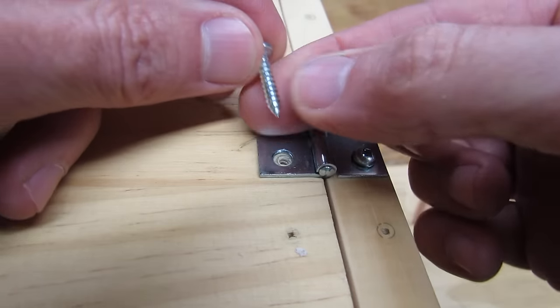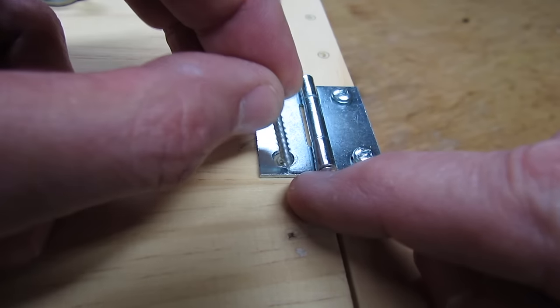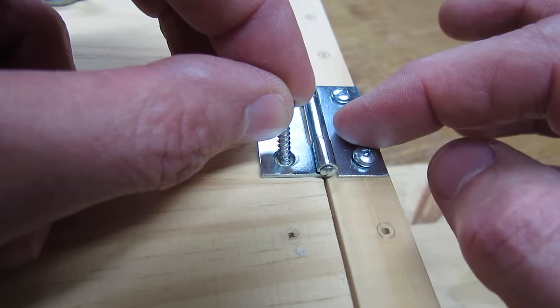And you'll notice the same thing with the hinge. You want to use a smaller screw than the hole so that you've got play in order to move the hinge around to adjust the door.